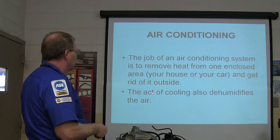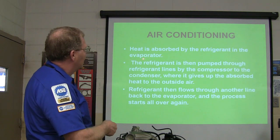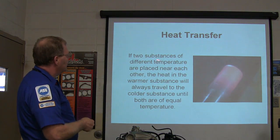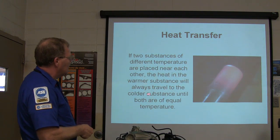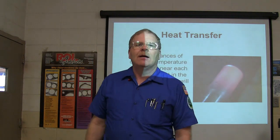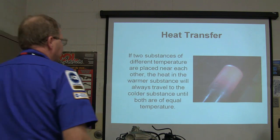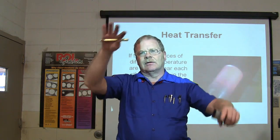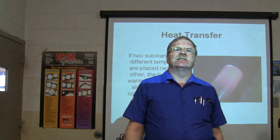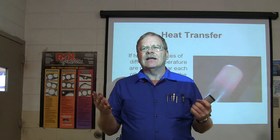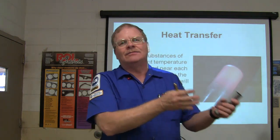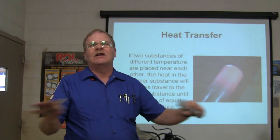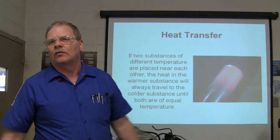The AC system is supposed to remove heat from the enclosed area and also dehumidify the air. Heat is absorbed by the refrigerant in the evaporator. If two substances of different temperature are placed near each other, the heat from the warmer substance will always travel to the cooler one until both are at equal temperature — that's the second law of thermodynamics. Everything eventually comes to the same temperature; to maintain a temperature difference, you have to keep supplying energy.